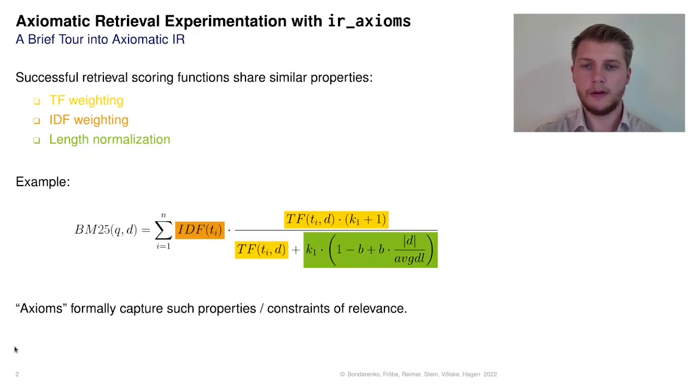First of all, let me briefly introduce axiomatic thinking in information retrieval. IR axioms are formally defined constraints that describe properties of successful retrieval scoring functions. If we consider the BM25 ranking function shown at the bottom of this slide, we can narrow down its three main properties.